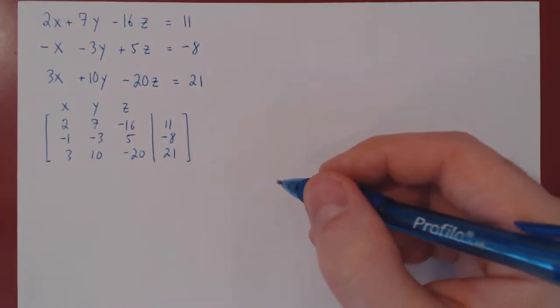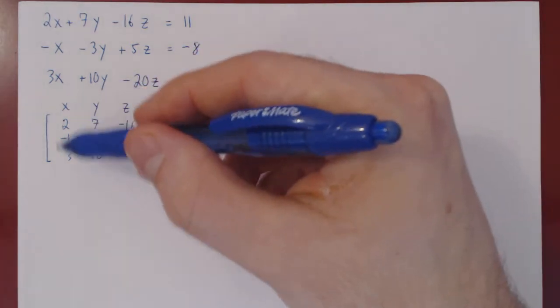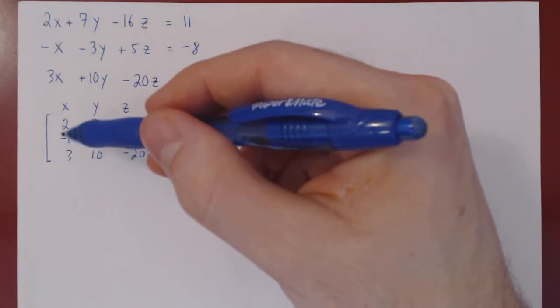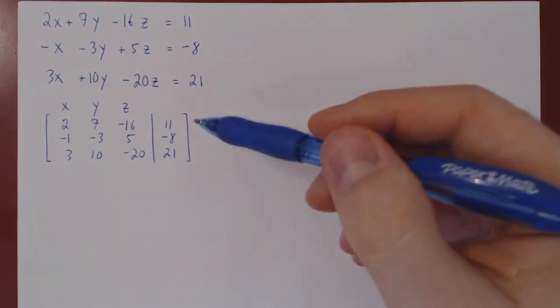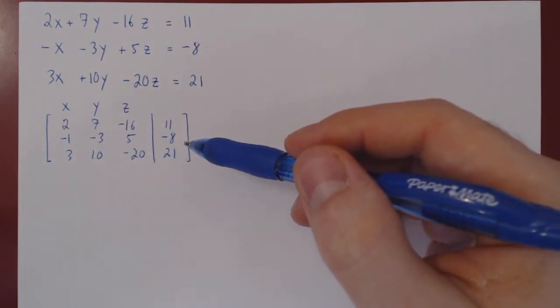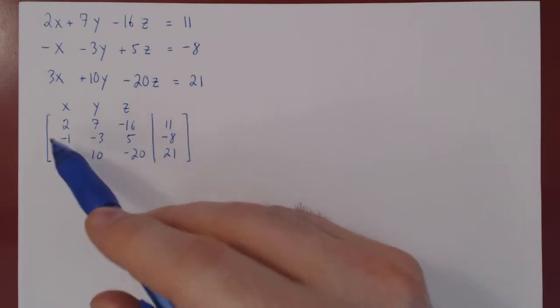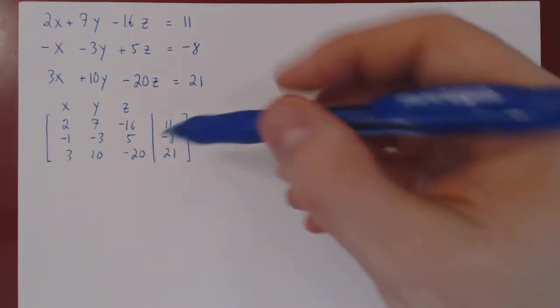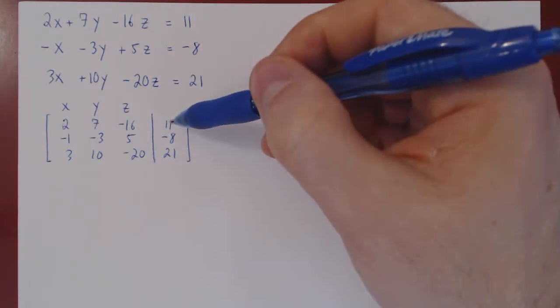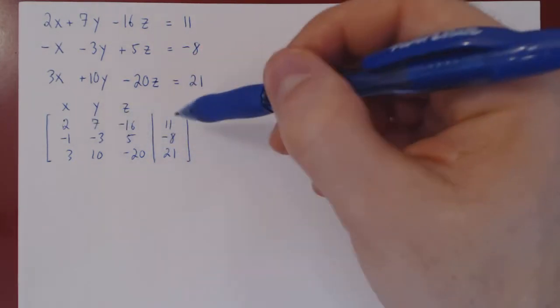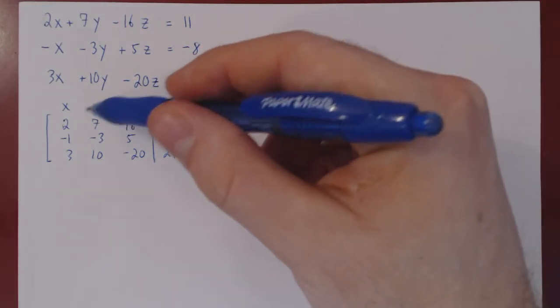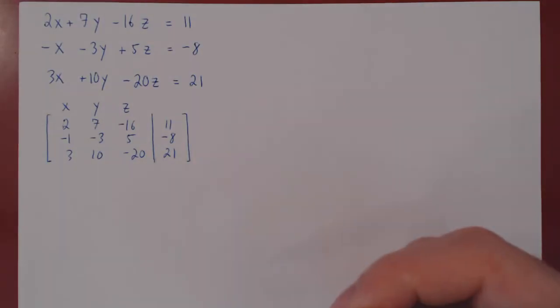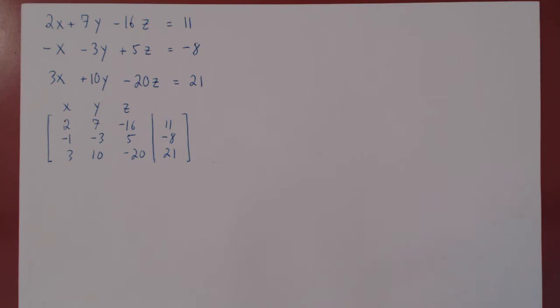The next step is to look at the leftmost column and try to introduce a leading one in the top row. Well, as always, we try to avoid introducing fractions as much as possible. So we could be naive here and multiply row two by one half, but then we'd have 7 over 2, 11 over 2, and negative 8. There would be two fractions here, and we'd have to carry them along the rest of our reduction. As much as possible, try to avoid introducing fractions.